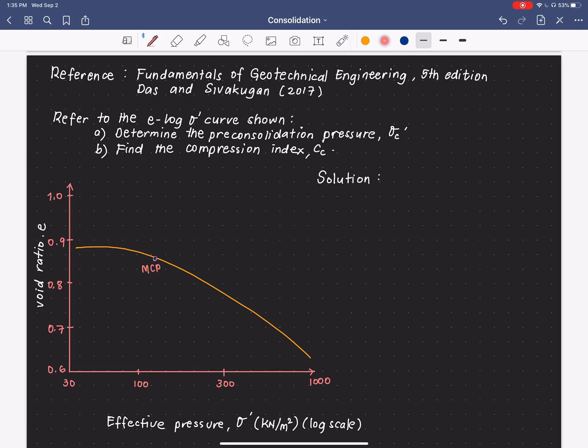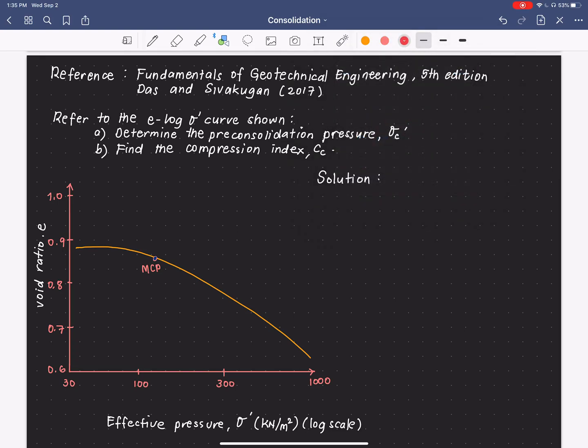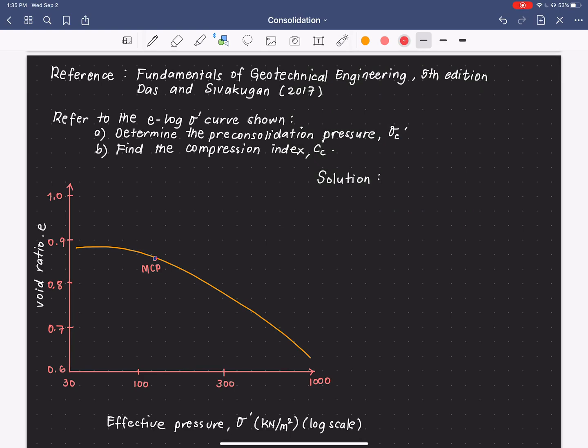From the maximum curvature point, the first step is to draw a horizontal line. Okay? So, let us say this is our step one.